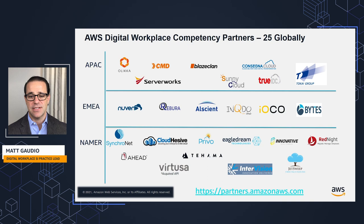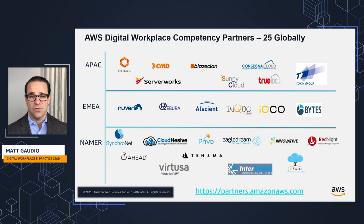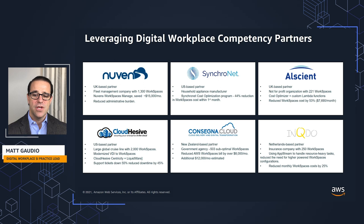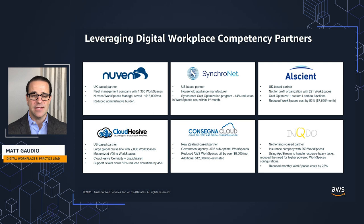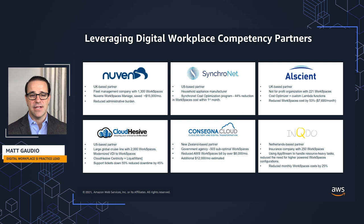Here's a list of our consulting partners validated through our competency process. You can find them all at partners.amazonaws.com — filter by end user computing or digital workplace to find partners with these capabilities. The first example is Nuvens, a UK partner working with a fleet management company that had about 1,300 Amazon WorkSpaces deployed. They used their tool called the Nuvens WorkSpaces Manager, available on the AWS Marketplace.